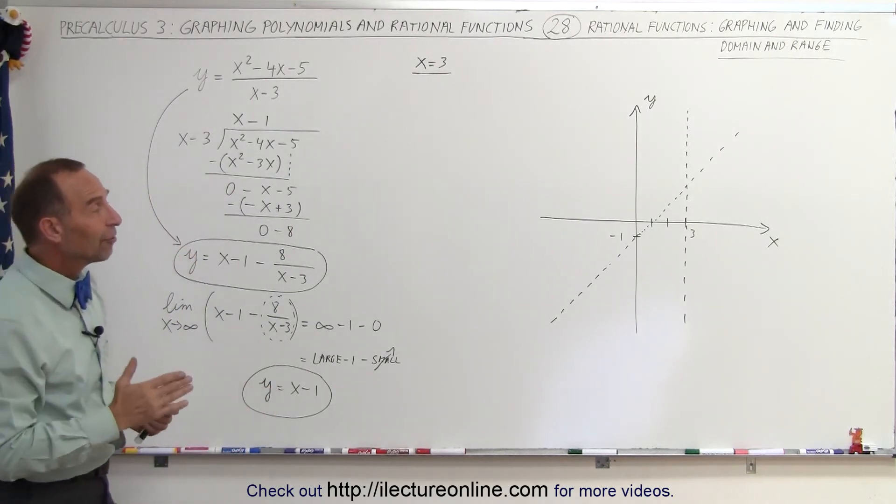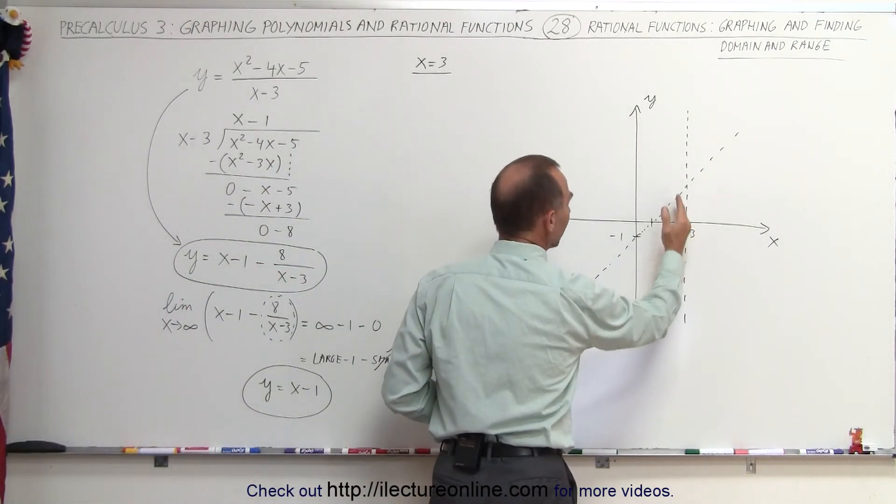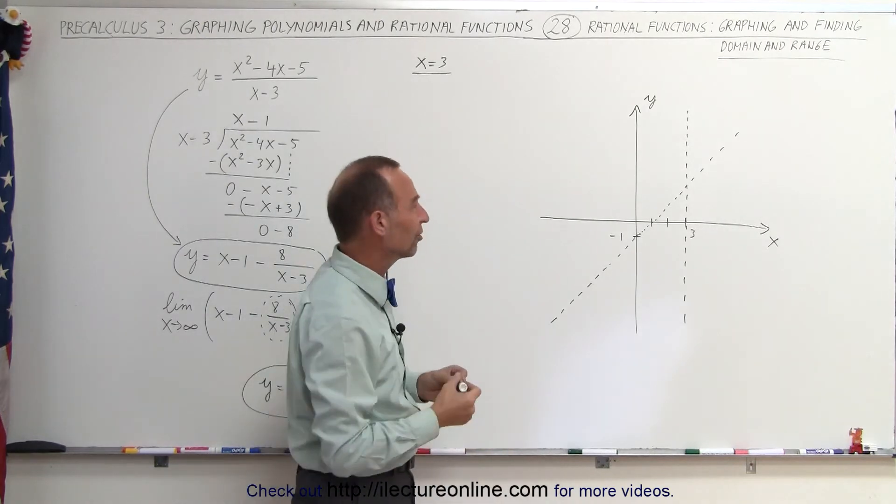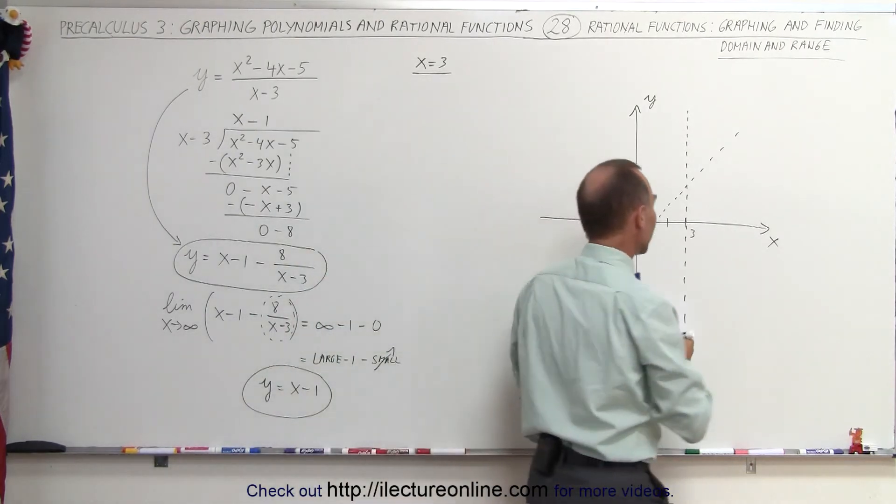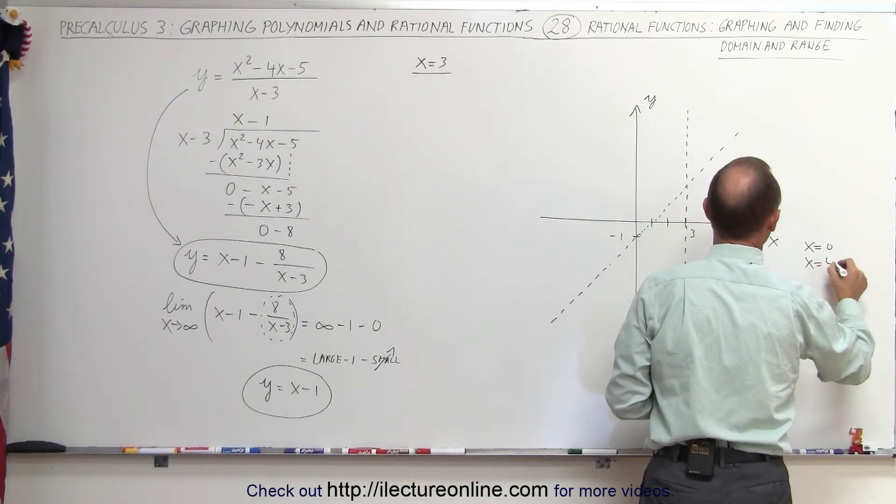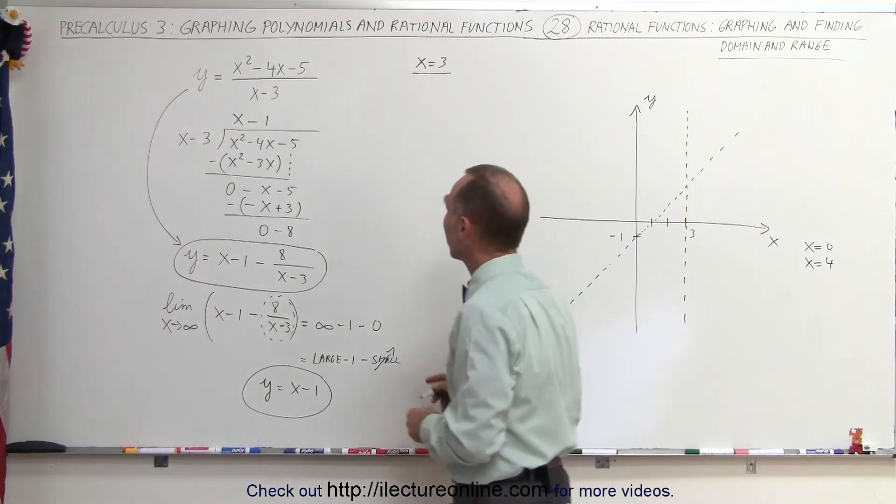So now I still have two regions: a region to the left of the vertical asymptote and to the right of the vertical asymptote. Let's try some test points to see what our graph potentially could look like. I'm going to try x equals 0 on the left side and x equals 4 on the right side.